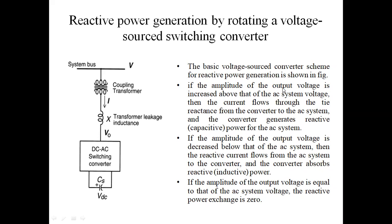Next point: If the amplitude of the output voltage V0 is increased above the system voltage V, the current flows through the reactance from the converter to the AC system, and the converter generates reactive power. So when V0 is greater than V, this voltage source converter is generating reactive power.